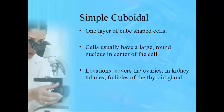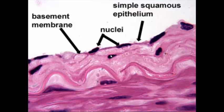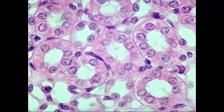Simple cuboidal tissue — one layer, cube-shaped cells — is usually easy to spot because the cells have a very large nucleus almost dead center. You'll find this tissue inside kidney tubules, in the thyroid gland, and covering the ovaries. These cells typically align in a ring or donut shape, with each cell having a prominent central nucleus — that's one layer of cube-shaped cells.